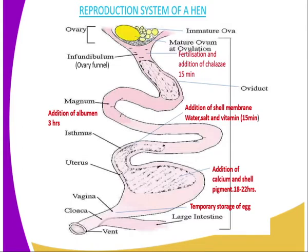The fertilized yolk then proceeds to the second part, the magnum. At the magnum, there is addition of albumen — a protein referred to as albumen. The egg stays here for three hours.